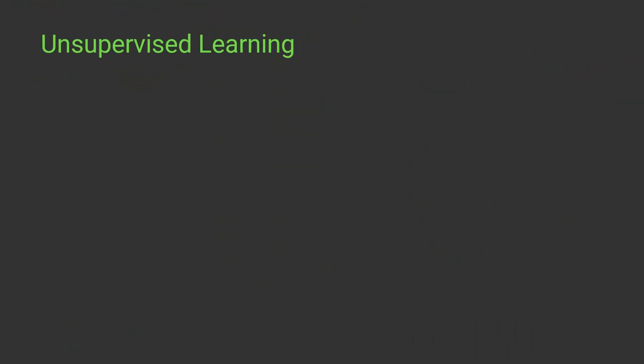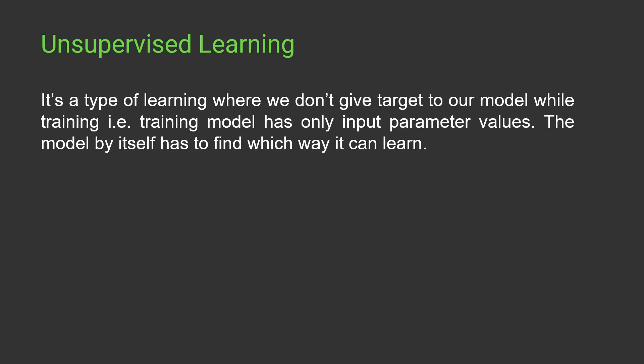The second type of learning is unsupervised learning. It is called unsupervised because it is opposite to supervised learning — in this case we don't have any labels for our machine learning models; we only feed our models with the input data without labels.